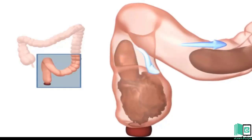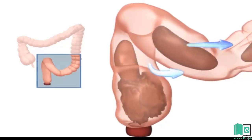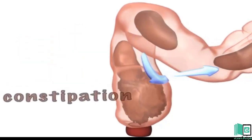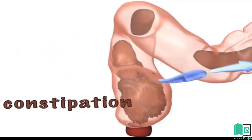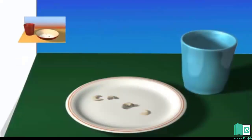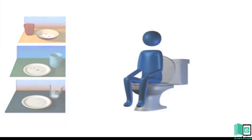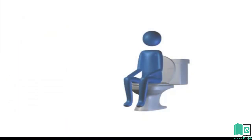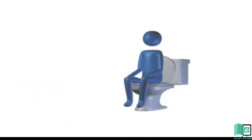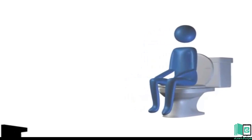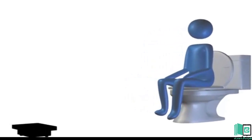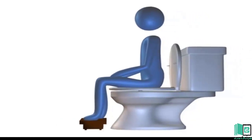We can avoid constipation by adopting a proper lifestyle: taking regular exercise, eating lots of fiber foods such as fruit, vegetables, and cereals, drinking plenty of water — at least 8 glasses every day — and going to the washroom when we have the urge.